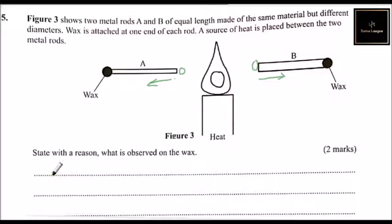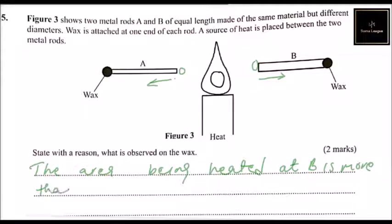So what you do is you can write: the area being heated at B is more than that of A. That is, diameter.